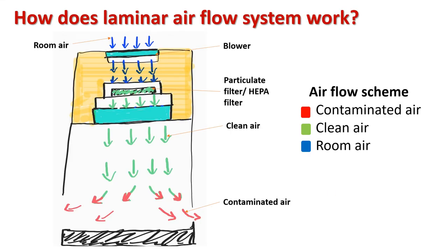How does this laminar airflow system work? When the device is turned on, the blower and the fluorescent light get activated. The blower sucks the room air; large particles are filtered through the filter pad. This filtered air then passes through the particulate filter, which facilitates the removal of micro contaminants such as bacteria or dust. A sterile work environment can thus be achieved within the working area with a uniform flow of air. A UV bulb is also present in the laminar airflow system, which kills remaining bacteria, pathogens, and other micro-level impurities.